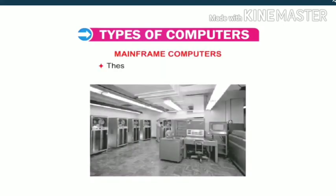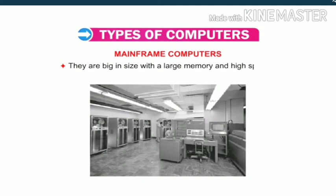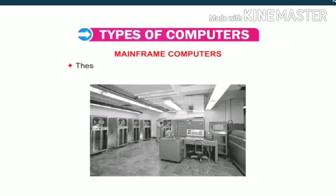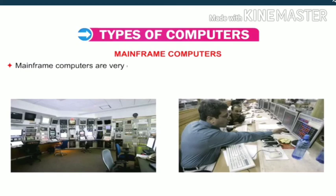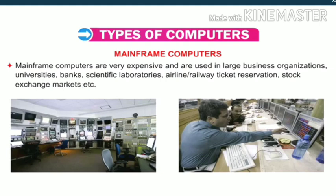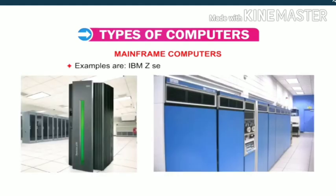Mainframe computers are very powerful, big in size, with large memory and high speed. They are designed to tackle huge amounts of data, and more than 100 users can use a mainframe computer simultaneously. They are used in networked environments, large business organizations, universities, banks, scientific laboratories, airlines, railway ticket reservations, stock exchange markets, etc. Examples are IBM Z-Series, PDP-10 and System Z-10.